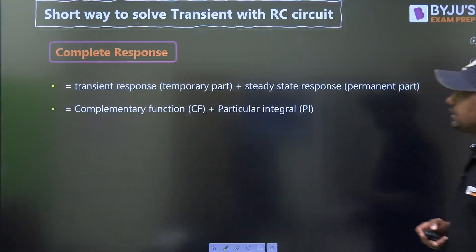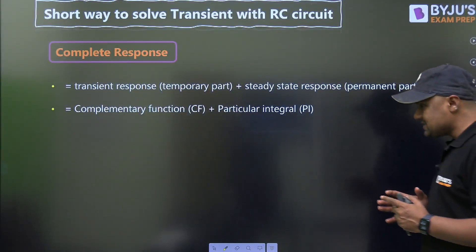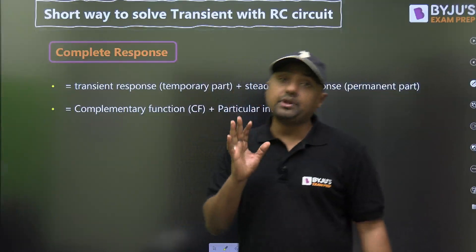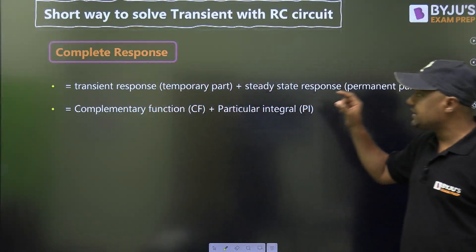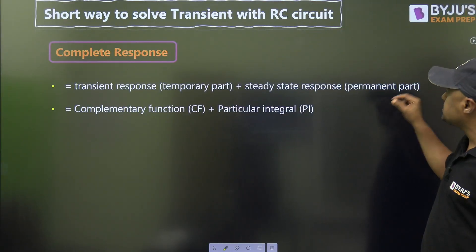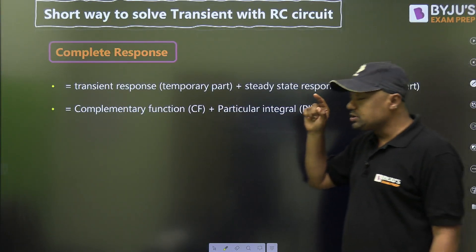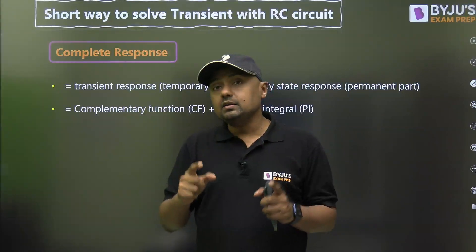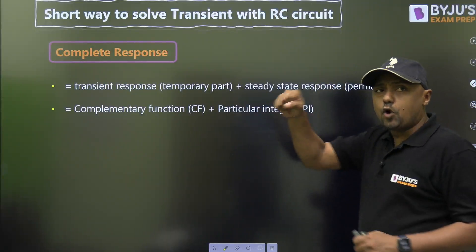First of all, when we talk about transients, we get two responses: one is called transient response, which is the temporary part, and one is called steady state response, which is the permanent part. Transient response is also called natural response, and steady state response is also called forced response.